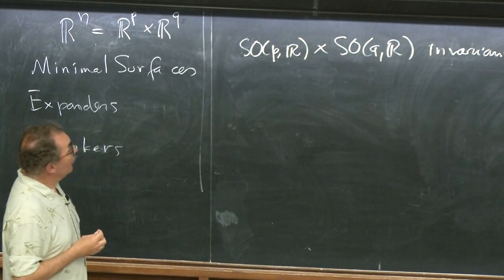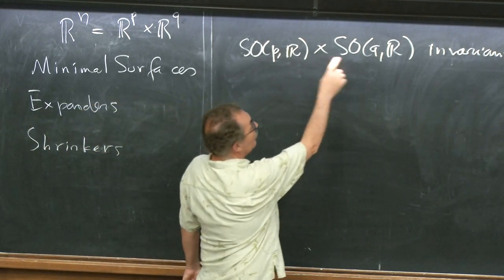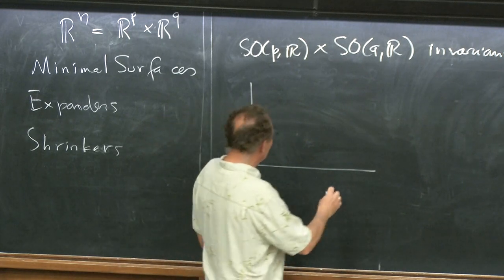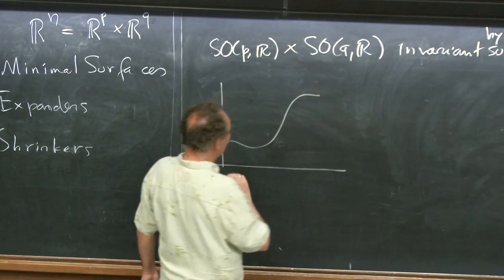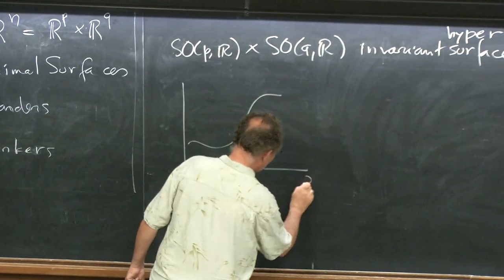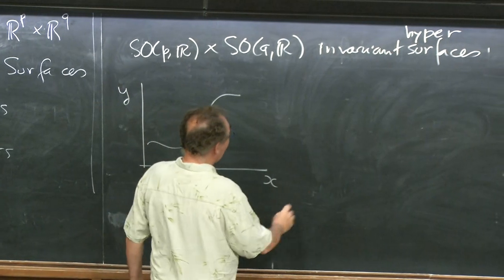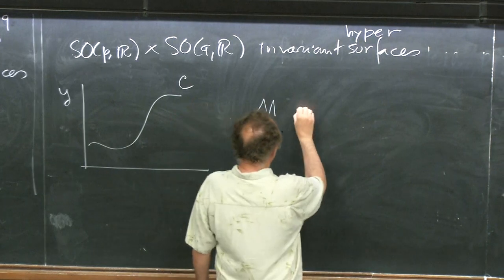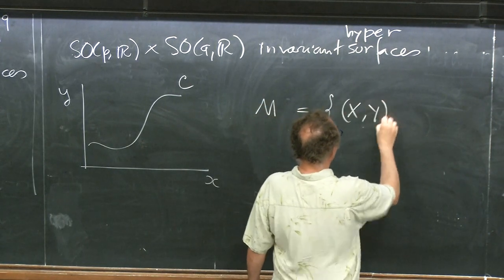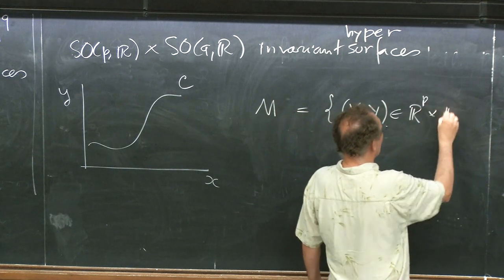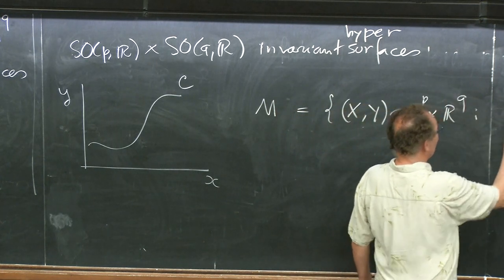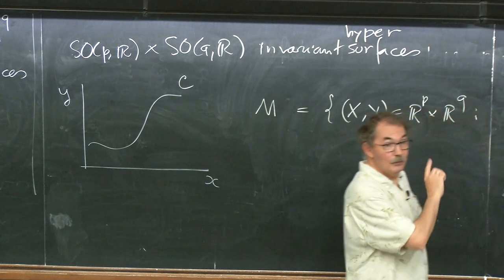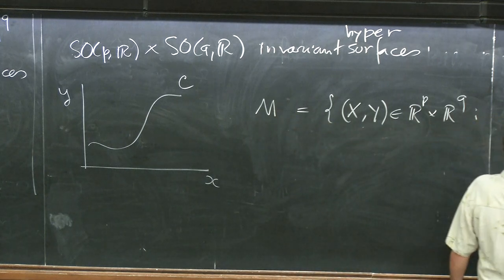All the surfaces I'll be looking at are invariant under the rotation groups in Rp and Rq. Simply, you take a curve in the first quadrant — x-axis, y-axis — and given such a curve C, I consider a surface M consisting of all points (x, y) in Rp cross Rq such that the lengths |x| and |y| give a point in the first quadrant belonging to curve C.